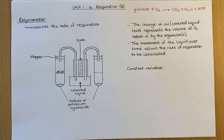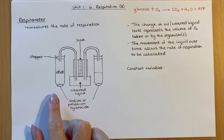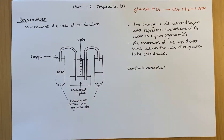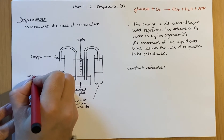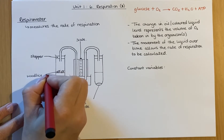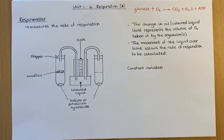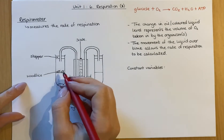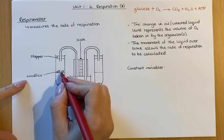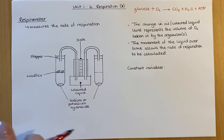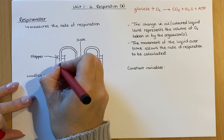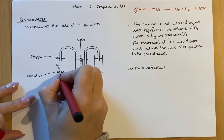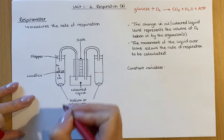This diagram shows a couple of little woodlice. In this example it could be any living animal — it could be plants, it could be animals, it could be anything at all. These woodlice, if they are respiring like normal, will take in oxygen and they will give out CO2, carbon dioxide.